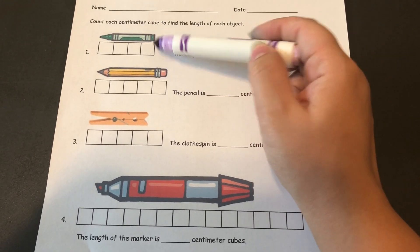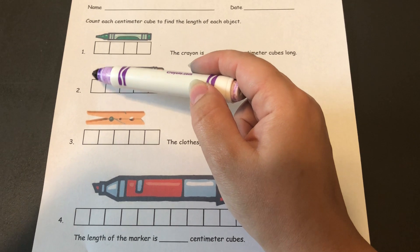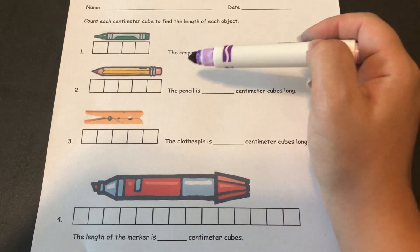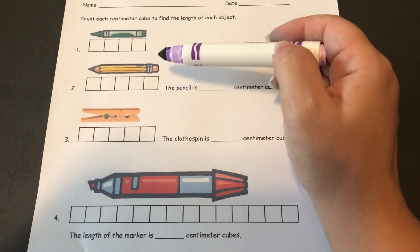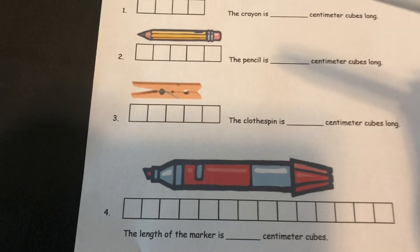I'm gonna let you do the first two on your own because those ones the centimeter cubes start where the item starts and they end where the item ends, so those are fairly easy. We can look closer at number three.